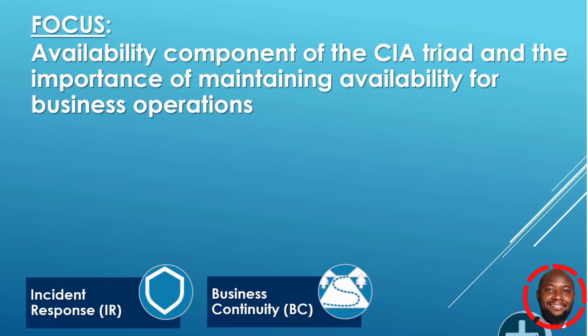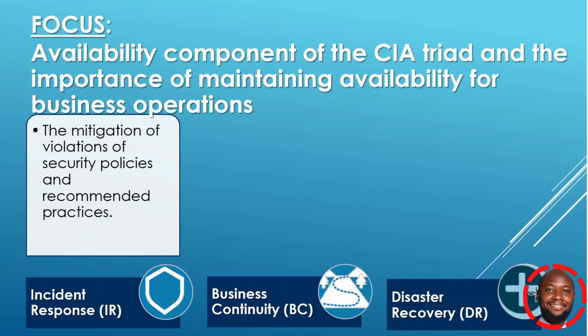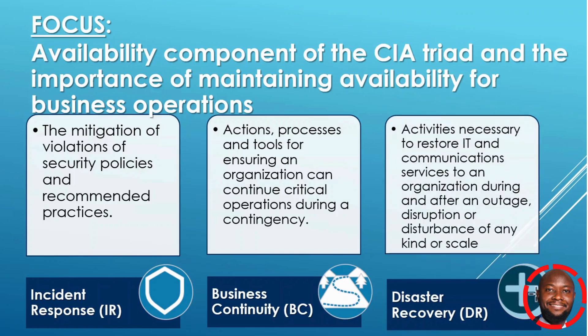Domain 2 is made up of Incident Response, Business Continuity, and Disaster Recovery. Incident Response talks about the mitigation of violations of security policies and recommended practices. Business Continuity focuses on actions, processes, and tools for ensuring an organization can continue critical operations during a contingency. Disaster Recovery covers the activities necessary to restore IT and communication services during and after an outage, disruption, or disturbance of any kind.